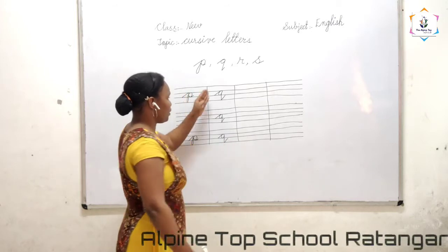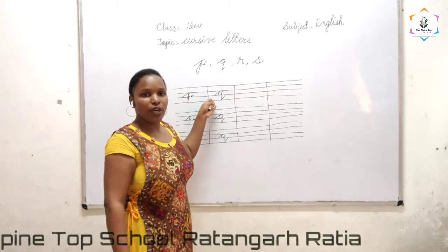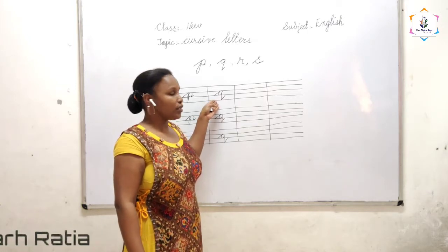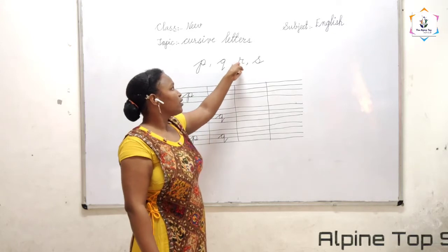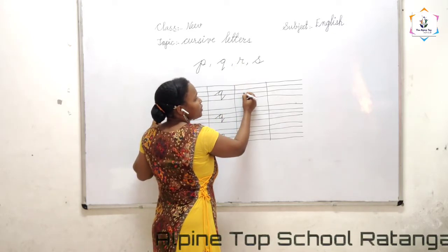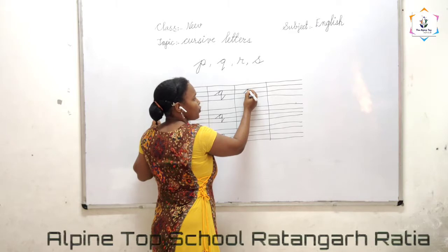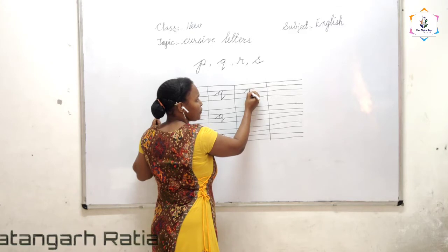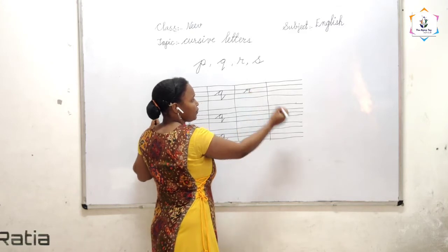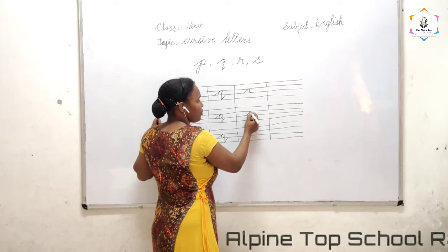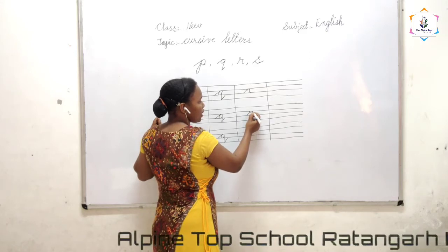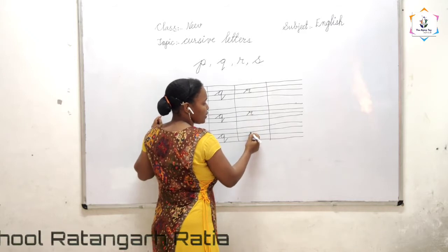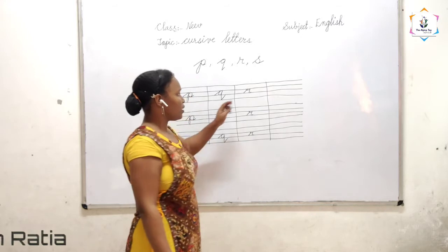This letter also comes in three lines. What is the sound of Q? The sound is 'qu' — like quill, quilt. Next is R. Slant line — R comes in two lines. Then make a small loop like this, make a curve, go touch up, then slant line. The sound of R is 'r'.